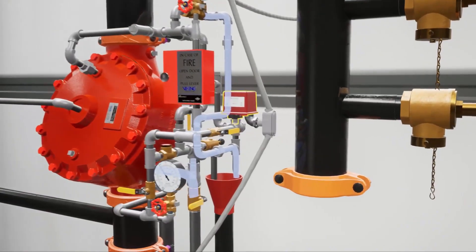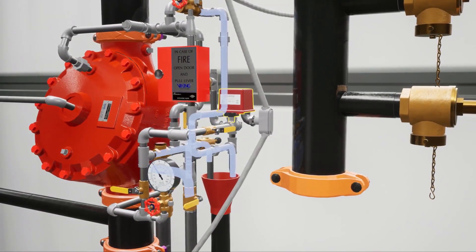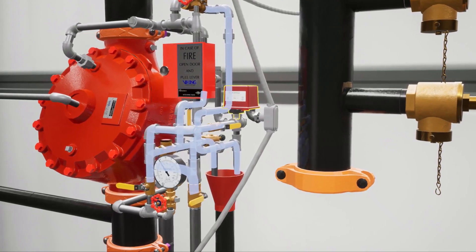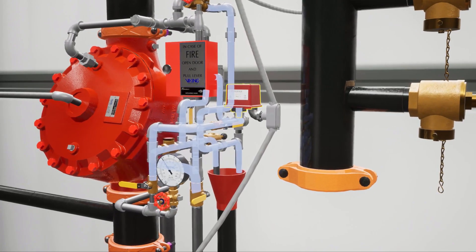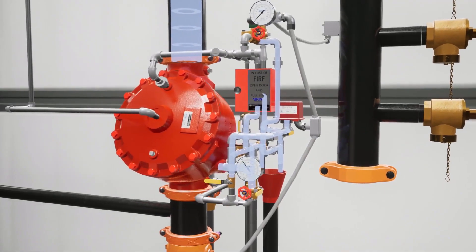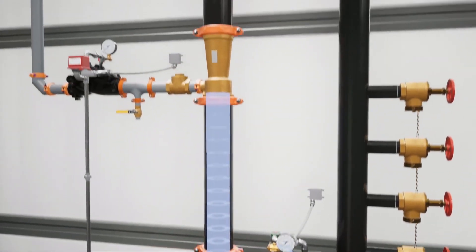Once the deluge valve is open, water will fill the trim and activate the water flow alarm. Water will enter the system riser, passing through the ratio controller.